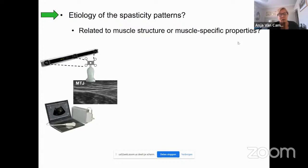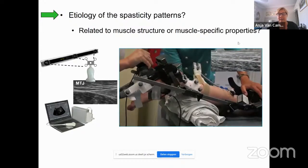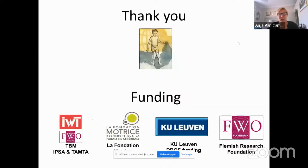By looking at spasticity patterns, we see that some muscles in some children have a different spasticity pattern than others. We are currently looking at muscle structures and other muscle properties to see whether we can define why they behave differently. We use the instrumented spasticity assessment to study muscle reaction to certain medications and treatments, and it can guide us to define what treatment is a good idea in some patients and why it is not in others. Thank you.